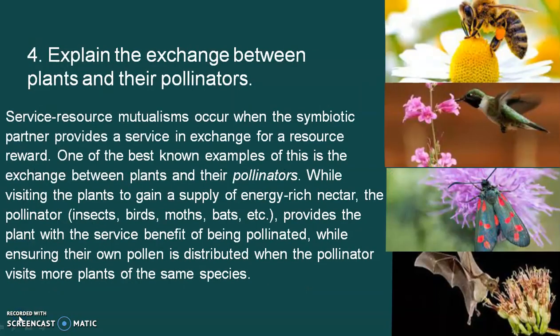The fourth question is: explain the exchange between plants and their pollinators. Pollinators are the agents. The two exchanges are called pollinators. We call this service-resource mutualism. It occurs when the symbiotic partner provides the service in exchange for a resource reward.